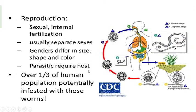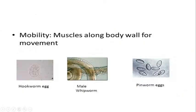A host organism is required for reproduction. Generally, if feces nearby are not washed off and we consume contaminated food, the larvae enter our body. When we pass feces, unfertilized eggs and larval stages are released, re-enter another host, and the cycle continues. Over one-third of the human population is potentially infested with these worms.